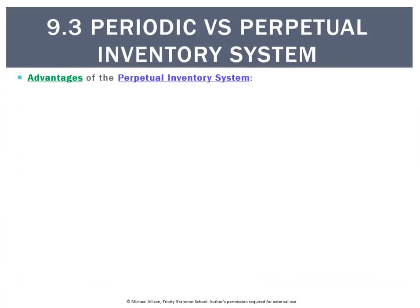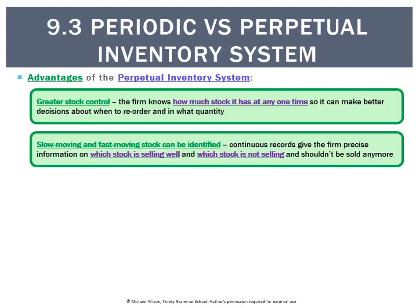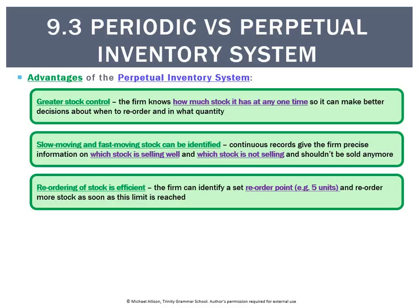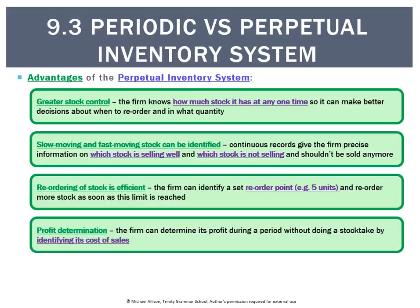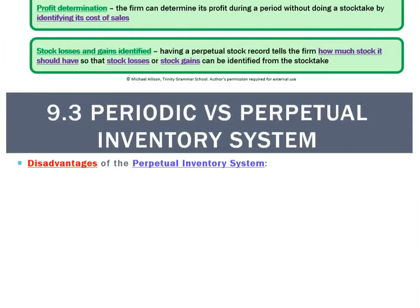The advantages of using this system include greater stock control — we can look up on the computer or stock card at any second how much stock we have. It enables good decision making: we can identify slow and fast moving stock. Reordering is very efficient — the system tells us when we get down to three or five units, whatever the reorder point is. It's also good for determining our profit because we can identify cost of sales very easily, and we can identify any stock gain or loss.